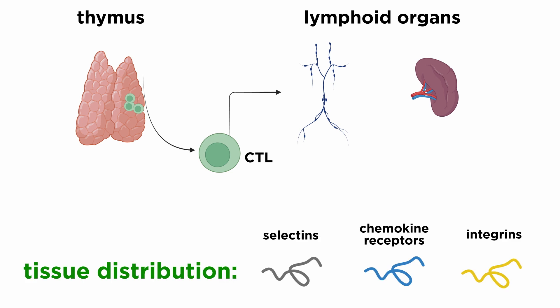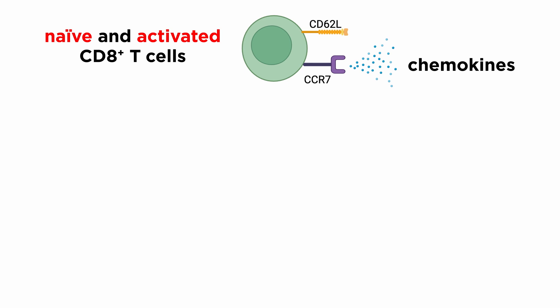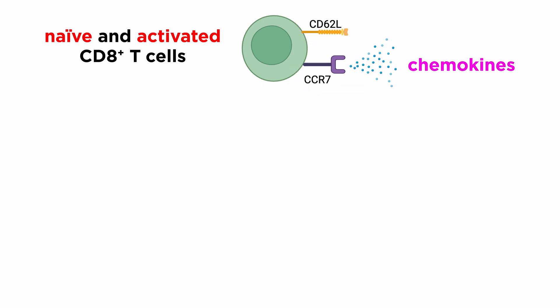The tissue distribution of lymphocytes is determined by targeting proteins, which can be divided into three categories: selectins, chemokine receptors, and integrins. Naive and activated CD8-plus T-cells display distinct sets of these targeting proteins that direct the differential homing abilities of these cells. Naive CD8-plus T-cells express high levels of the lymph node homing receptor L-selectin, or CD62L, and CCR7, a chemokine receptor that recognizes chemokines produced in the T-cell areas of secondary lymphoid organs.